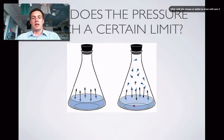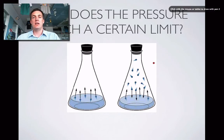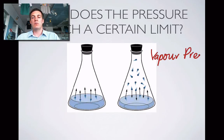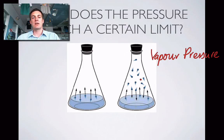Liquid particles will continue to evaporate, but particles will also continue to condense. When these two processes reach a balanced state — which only depends on the temperature and the type of liquid — they'll reach a pressure limited by the balance of those two rates. We call that the equilibrium vapor pressure. So there will be a certain pressure that any one particular liquid will exert above that liquid, called its vapor pressure, and it occurs because some of the liquid evaporates and eventually reaches a limit as evaporation and condensation balance out.